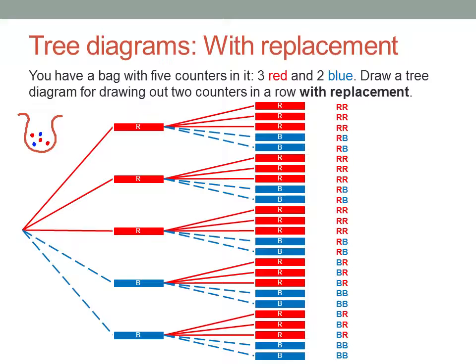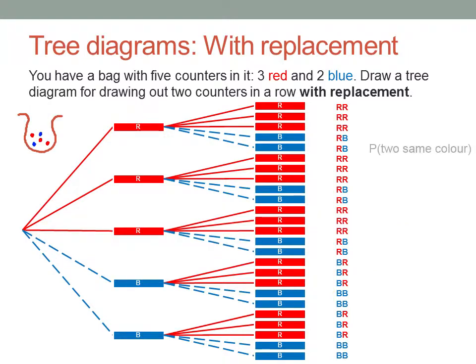You can work the outcomes out by systematically working through the tree, going across from left to right for each outcome. And we can now answer questions like: what's the probability of getting two counters of the same colour? That's thirteen outcomes out of twenty-five, which is just over fifty percent.